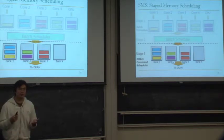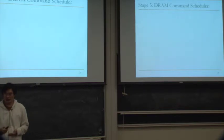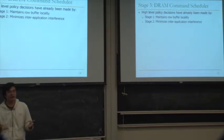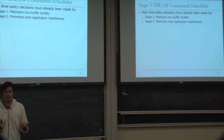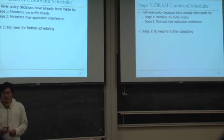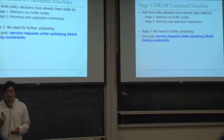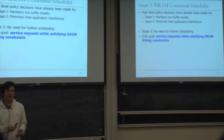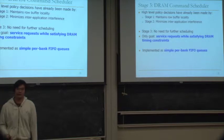Stage 3, the DRAM scheduler, works as follows. Because Stage 1 maintained row buffer quality and Stage 2 minimized inter-application interference, Stage 3 does not need to do any further scheduling beyond servicing requests while satisfying DRAM timing constraints. We implement this as a simple FIFO queue.